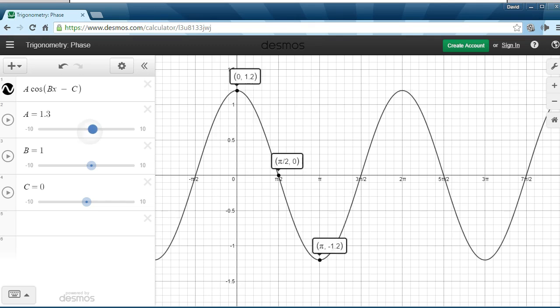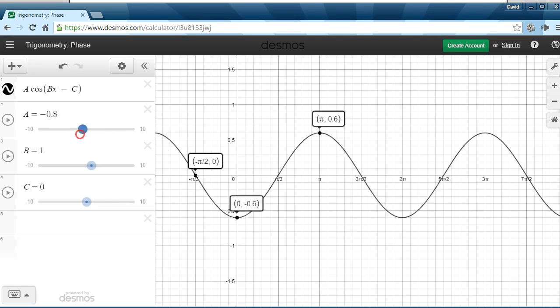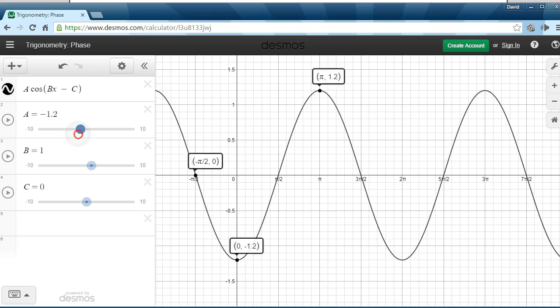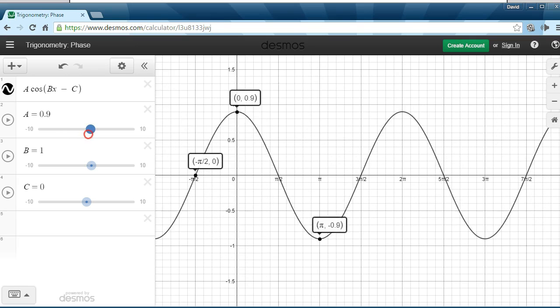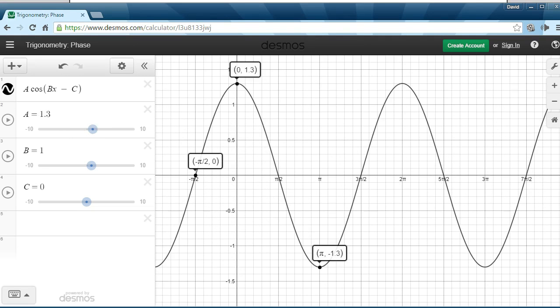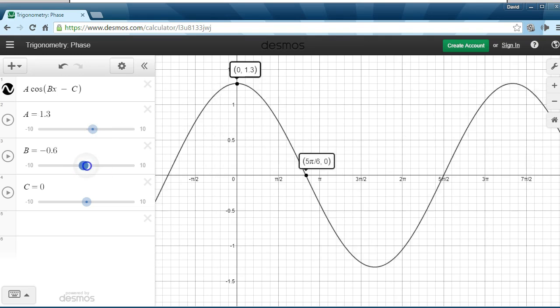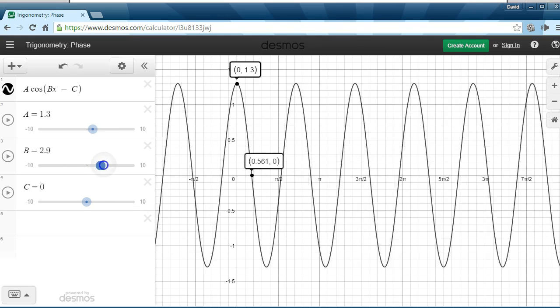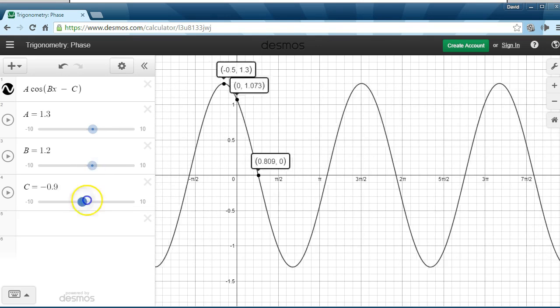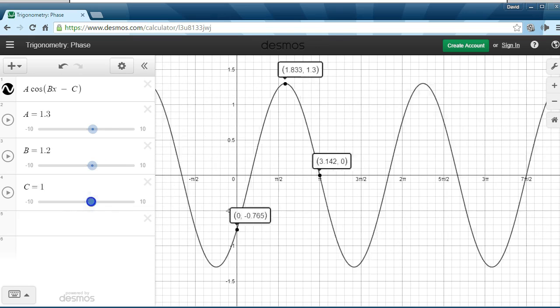If A changes, that just changes the amplitude, just like before. We go to the negative, it flips over. We start at our low point rather than our high point. B compresses everything in, or stretches everything out. And C is that shift, that phase shift left to right.